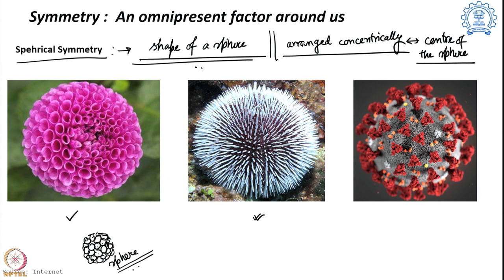The same thing is found in a sea creature known as a sea urchin — all the different white portions coming out of it are oriented to maintain the spherical shape, connected from the center in a proper way. And this one — the COVID-19 virus — also has spherical symmetry. The spike proteins coming out of it are oriented in a very symmetric manner, maintaining the spherical symmetry.